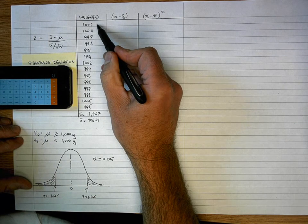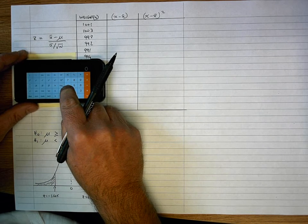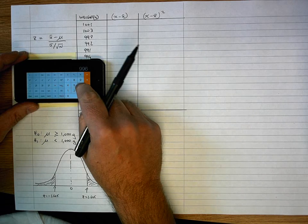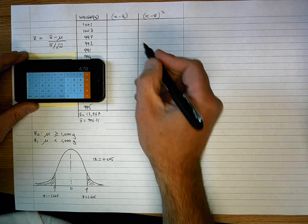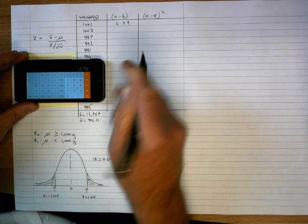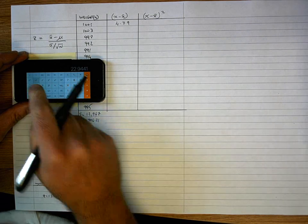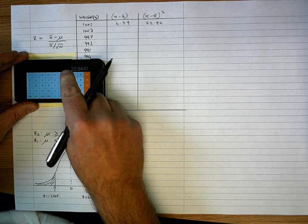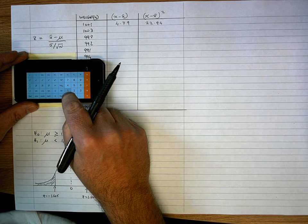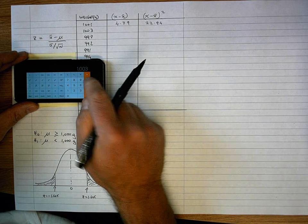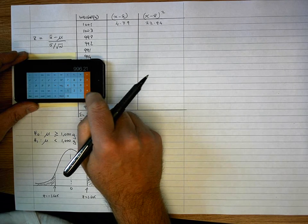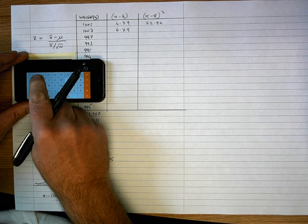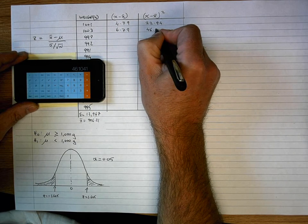So my first value of X is 1,001, so I'll put that in my calculator. 1,001 minus my value of the mean, 996.21. That gives me a result of 4.79. And while I have that on my calculator, I'm going to square it, and that gives me a value of 22.94. My next value is 1,003. So 1,003 minus the mean, 996.21, is equal to 6.79. And while that's on my calculator, I'm going to square it to give me 46.10.